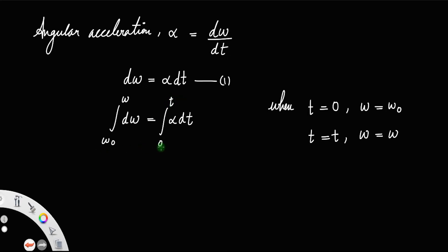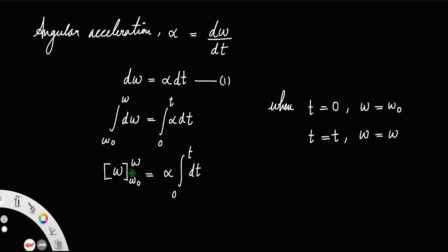When time equals 0, angular velocity equals omega-zero, and when time equals t, it is omega. Now, the integral of dω is omega, and we put in the upper and lower limits, equal to alpha times the integral from 0 to t of dt. This gives omega with the upper limit substituted, then minus the lower limit, equal to alpha times t evaluated from 0 to t.